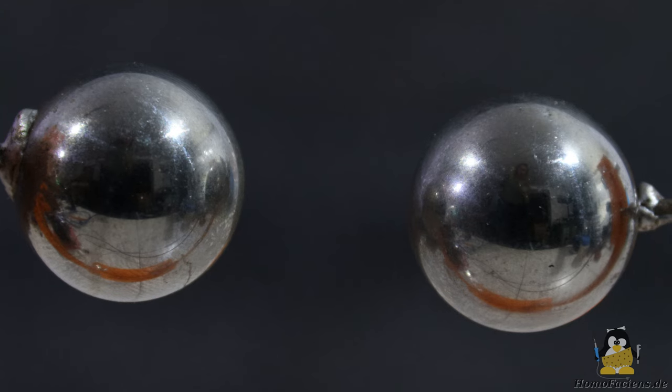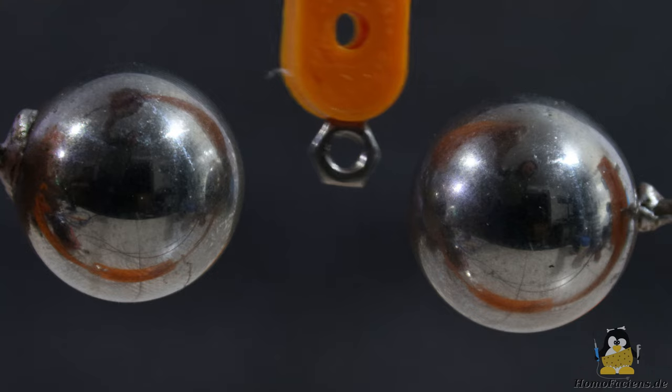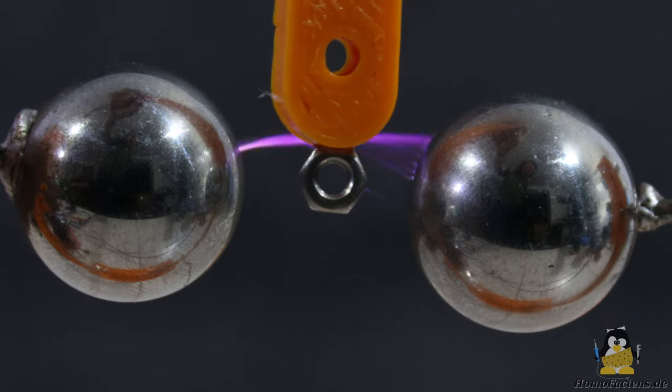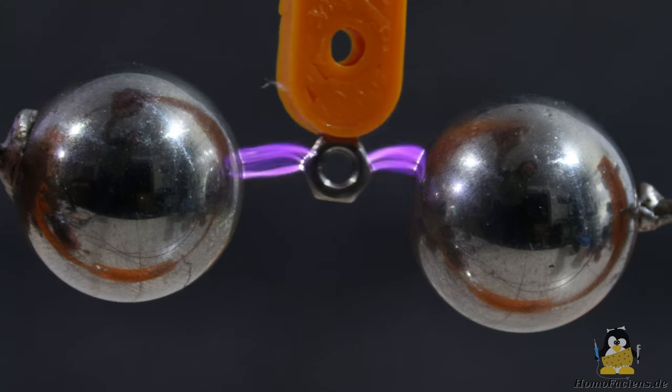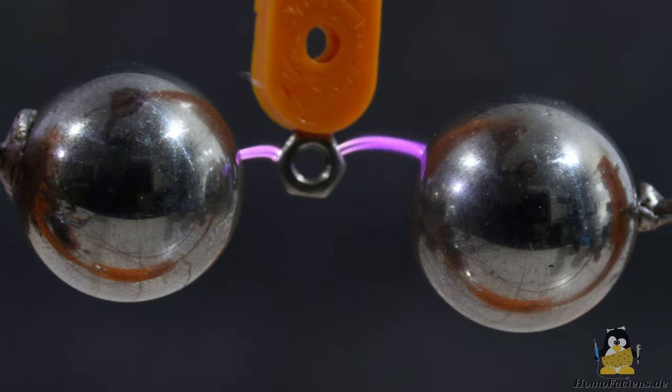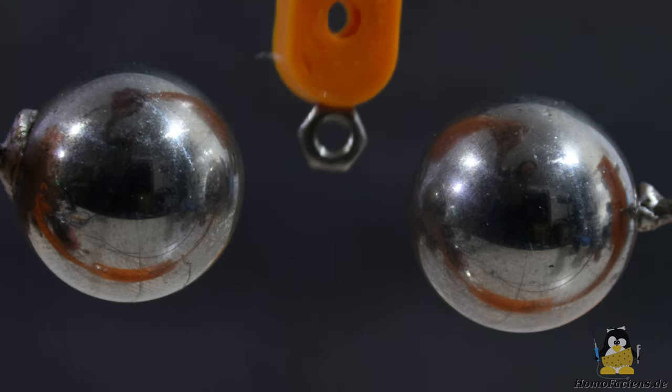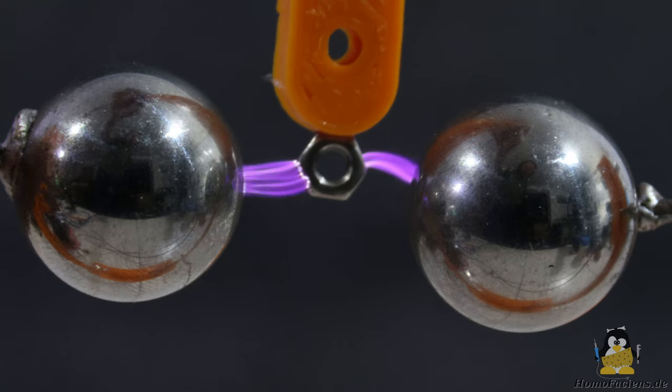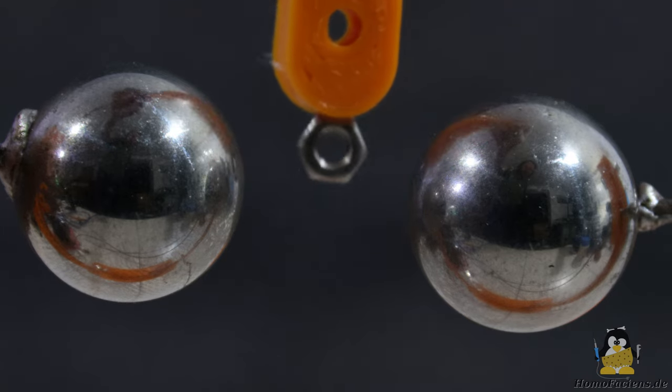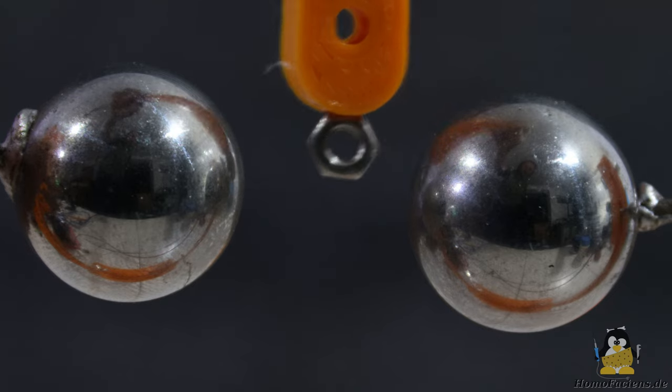As a last experiment I bring a metal particle in the form of an M3 nut between the two 20mm steel ball electrodes. Now sparks jump over at a distance of more than 10mm without the nut touching one of the two electrodes. The simulated metal particle expands the maximum possible spark gap by the diameter of the nut. Impurities therefore play a considerable role in the processes of spark erosion.